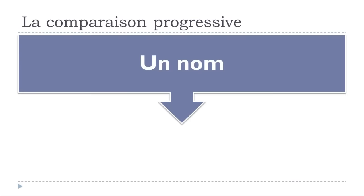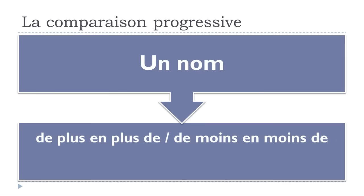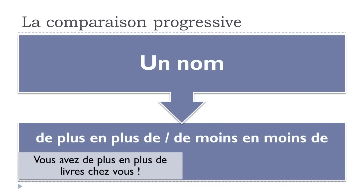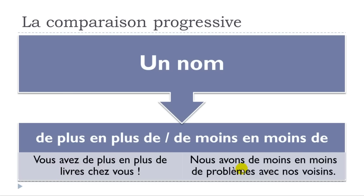With a noun (un nom), it works a bit differently. You use 'de plus en plus de' or 'de moins en moins de' — you must add 'de' after the expression. For example: 'vous avez de plus en plus de livres' and 'nous avons de moins en moins de problèmes avec nos voisins.' That extra 'de' is the only difference from adjectives and adverbs.